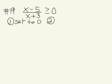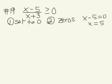The next step is we want to find the zeros. The way we do that is we set our numerator equal to 0. So x minus 5 is equal to 0, so we get x equals 5.